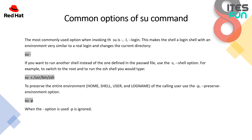The most commonly used option when invoking su is -l or --login. This makes the shell a login shell with an environment very similar to a real login and changes the current directory, like su space minus. If you want to run another shell instead of the one defined in the /etc/passwd file, use the -s or --shell option. For example, to switch to root and run the zsh shell, you would type: su -s /usr/bin/zsh. To preserve the entire environment — like HOME, SHELL, USER and LOGNAME — of the calling user, use the -p option, which preserves the environment. Note that when the login option is used, -p is ignored.